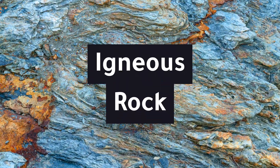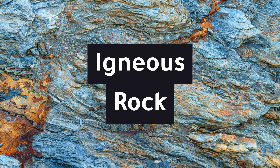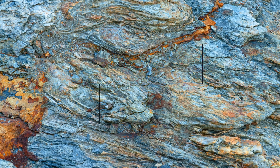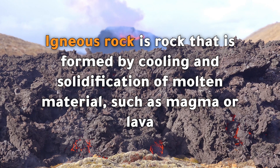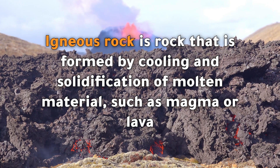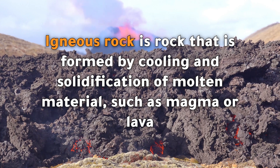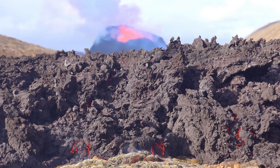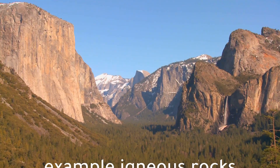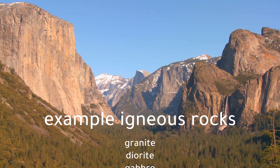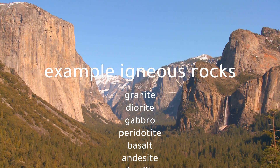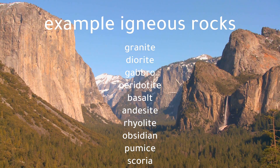Igneous rock is rock that is formed by cooling and solidification of molten material, such as magma or lava. Examples of igneous rocks include granite and those listed here.